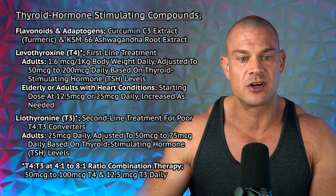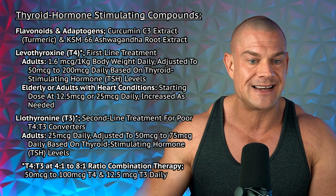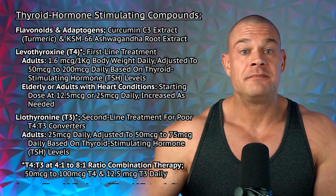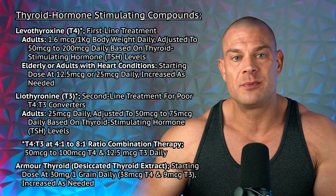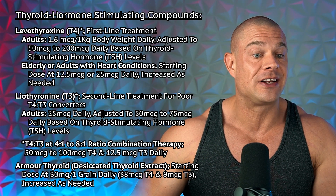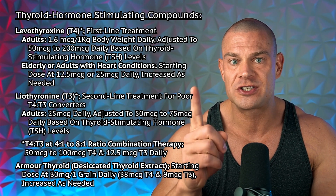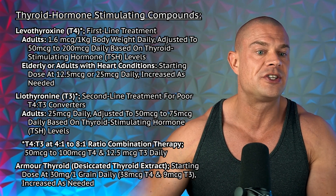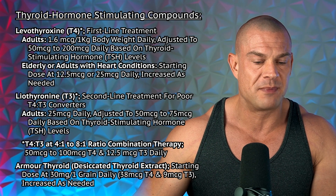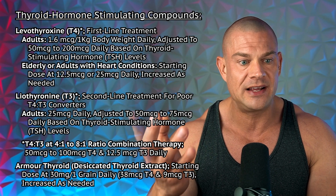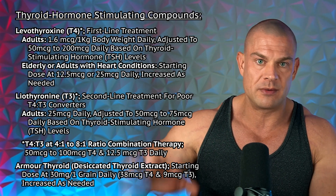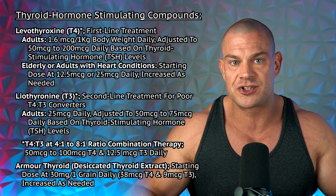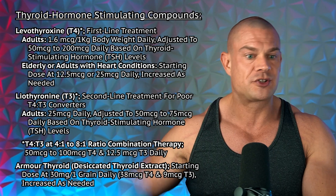Even flavonoids and adaptogens like curcumin C3-complex or KW66 ashwagandha root extract all contribute to thyroid function in various degrees. And if you're metabolically compromised, have an autoimmune disease, or don't want to eat healthy, there's always levothyroxine T4 — the first-line treatment for Hashimoto's disease, Graves' disease, or other metabolic disorders. For adults, the starting dose is 1.6 micrograms per kilogram daily, adjusted to anywhere between 50 and 200 micrograms T4 daily, based on how thyroid-stimulating hormone levels fluctuate throughout treatment.